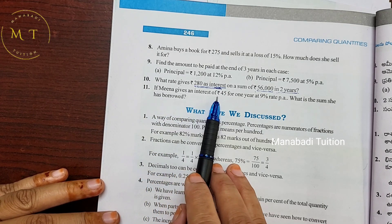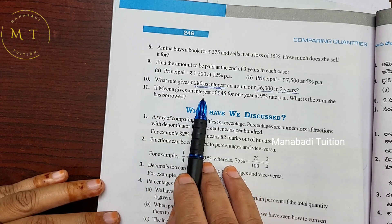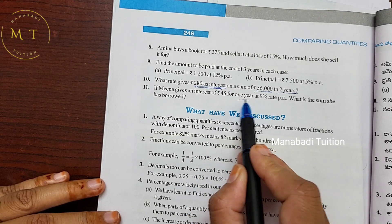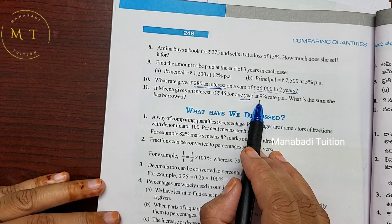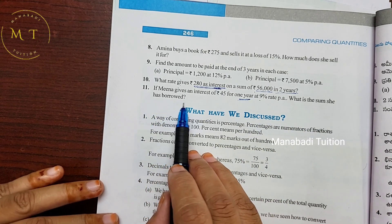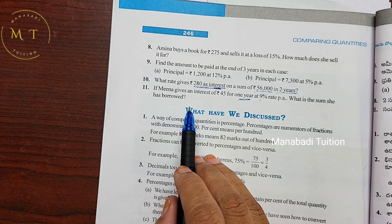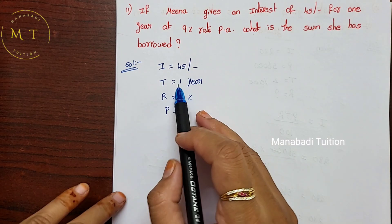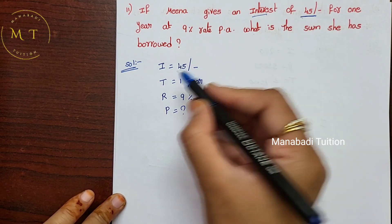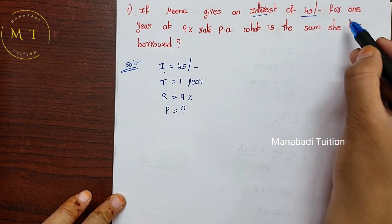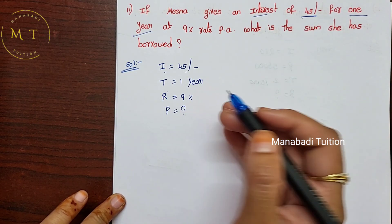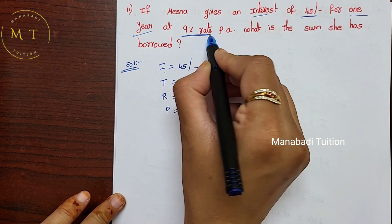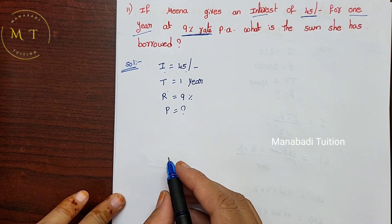Question 11: Meena pays an interest of 45 rupees for 1 year at a rate of interest of 9%. Find the sum she borrowed — that is, find the principal. Given: I = 45, T = 1 year, R = 9%.